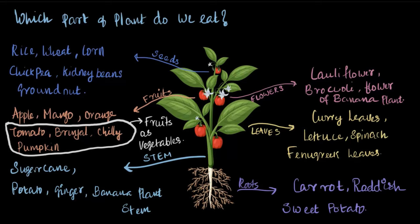Germinated seeds are consumed by us and they are known as sprouts. Germinated seeds can again be considered a part of the plant that we consume as food. So with all these examples, next time when you sit down for a meal, you would clearly know from which part of the plant the particular food on your plate has come from.